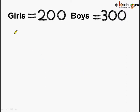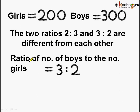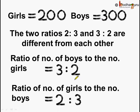So remember, when the number of girls is 200 and the number of boys is 300, the two ratios 2 is to 3 and 3 is to 2 are different from each other. The ratio of boys to girls is 3 is to 2, and the ratio of girls to boys is 2 is to 3. So the two ratios are different.